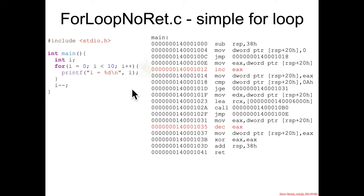So we get some new assembly instructions: inc for increment — that's probably the i plus plus — and dec for decrement, which is probably the random i minus minus I threw in.